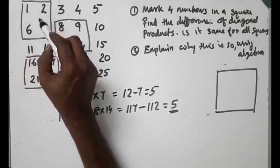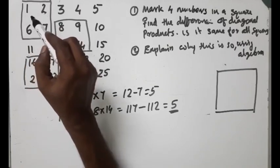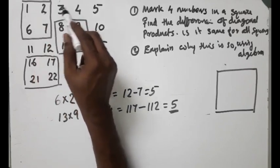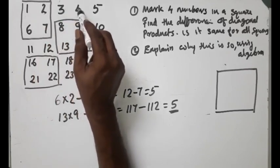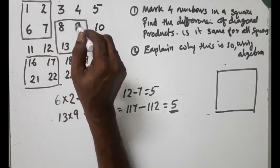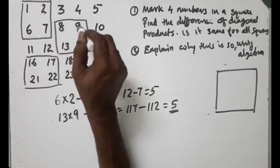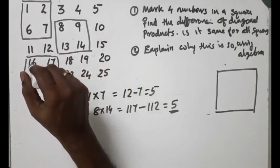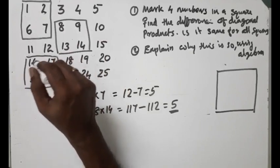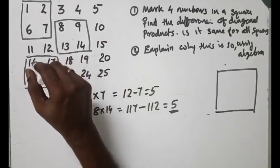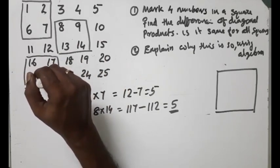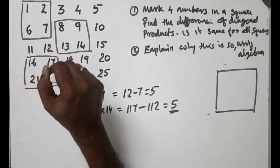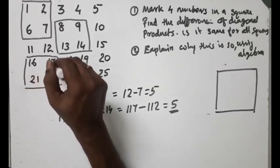Then we will take 5. 5 would be 7. 3 would be 4, 5 would be 8, and 9 would be 9. Here, 14 would be 18, 16 would be 5, 21 would be 21, 21 would be 18, 22 would be 72.